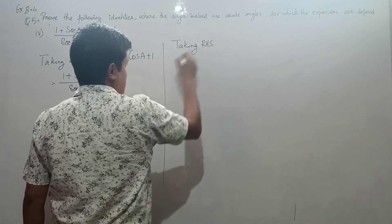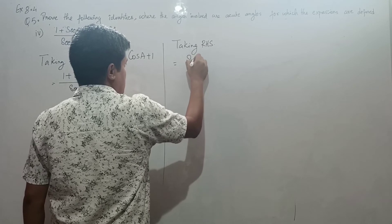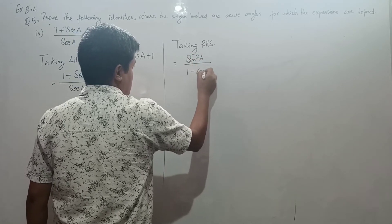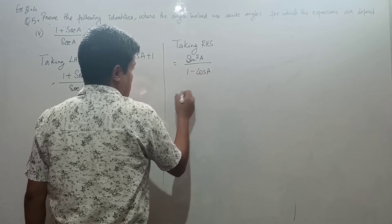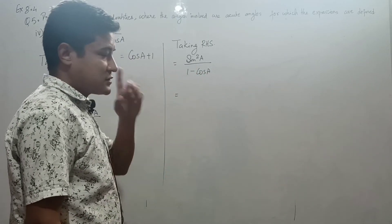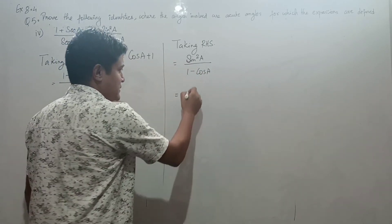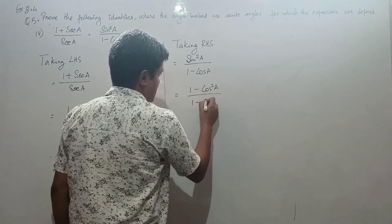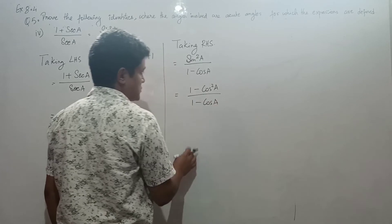Taking right hand side equals sine squared a by 1 minus cos a. Using basic trigonometric functions, sine squared a equals 1 minus cos squared a divided by 1 minus cos a.